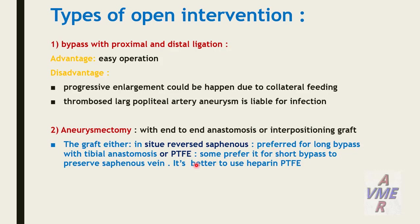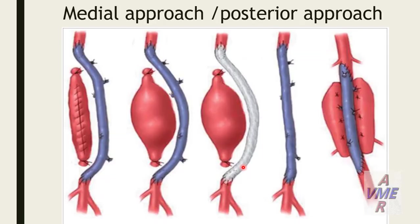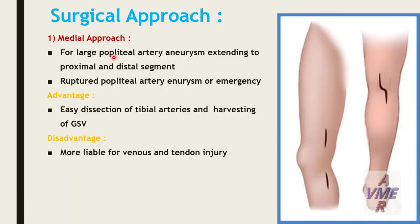The graft — either in situ or reverse saphenous vein, preferred for long bypass with tibial anastomosis — or PTFE, some preferred for short bypass, with comparative results to saphenous vein. Medial approach is used for large popliteal artery aneurysm extending to proximal and distal segment, and in case of ruptured popliteal artery aneurysm or emergency. Advantage: easy dissection of tibial anastomosis and harvesting of saphenous vein. Disadvantage: more liable for venous and tendon injury.